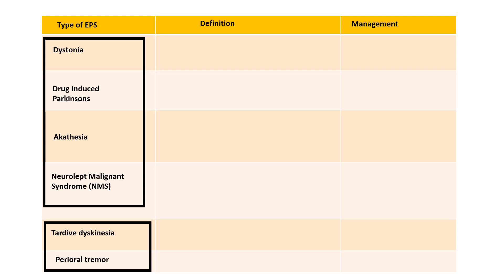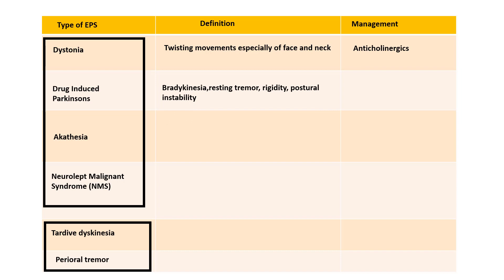Dystonia refers to twisting movements especially of the face and neck; it is treated with anticholinergic agents. Drug-induced Parkinsonism has the cardinal features of bradykinesia, resting tremor, rigidity, and postural instability, and is also treated with anticholinergic agents. Akathisia refers to the inability to keep the lower limbs still, and it is treated with beta-blockers like propranolol.